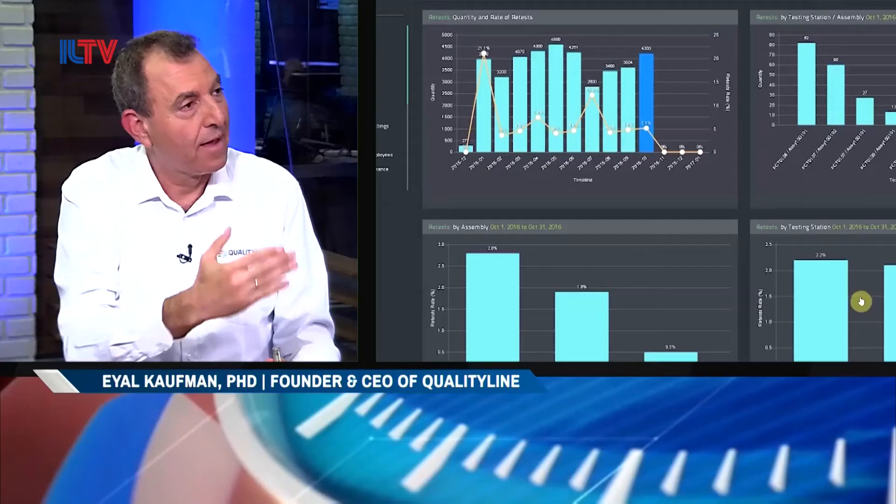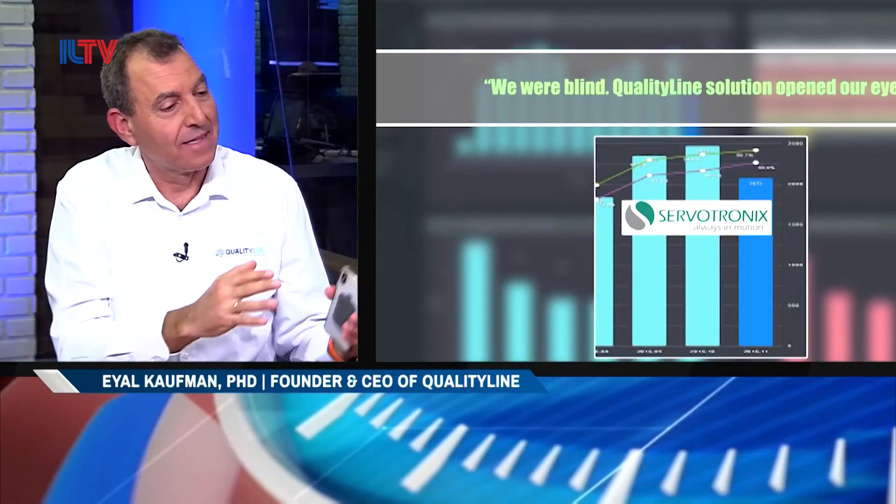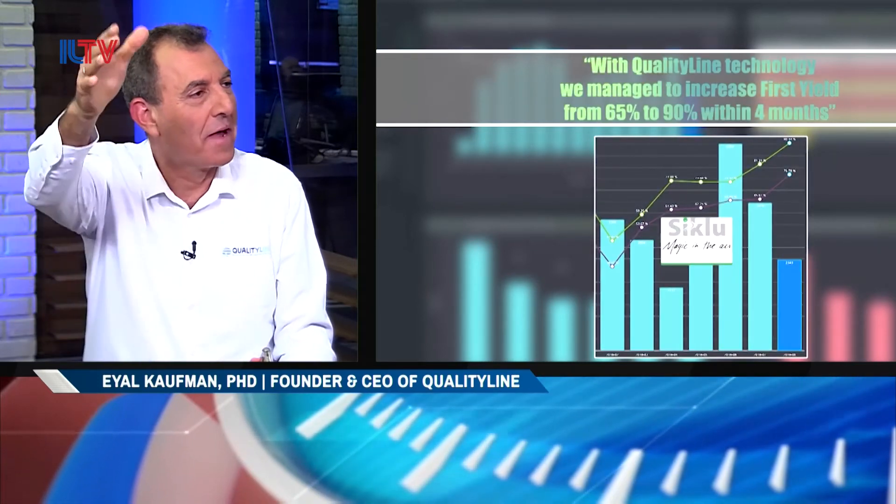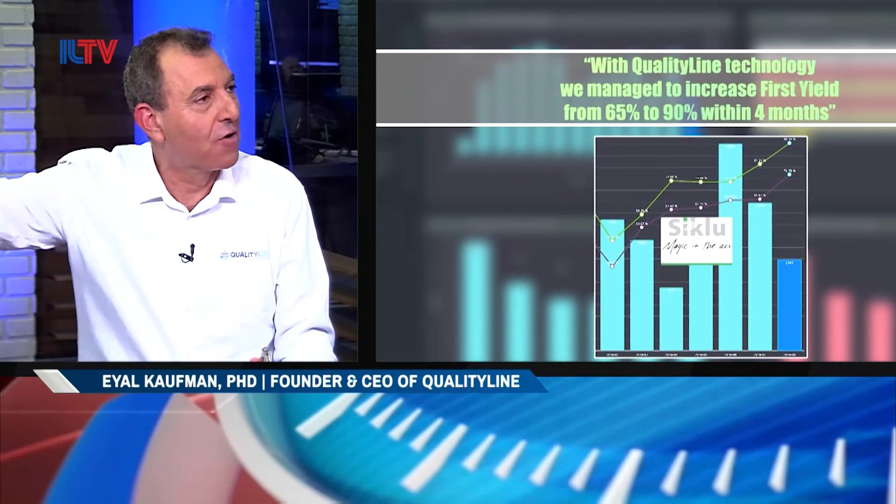QualityLine's data integration enables us to integrate with any factory, and it doesn't matter if the factory is located here or on the other side of the world. All you need is a computer and an internet connection. You can sit in your office, log into your factory in China, in Romania, in Mexico, and quickly identify quality and efficiency problems and resolve them.